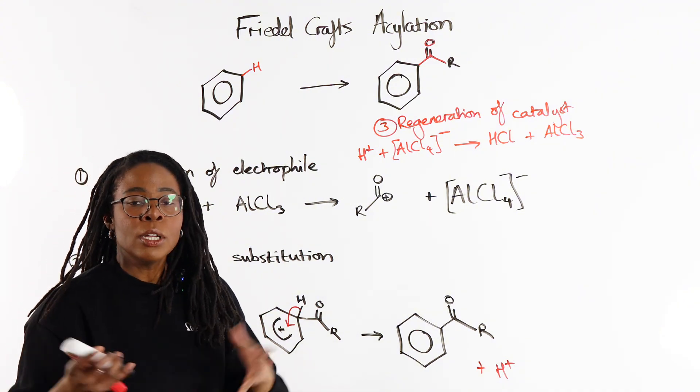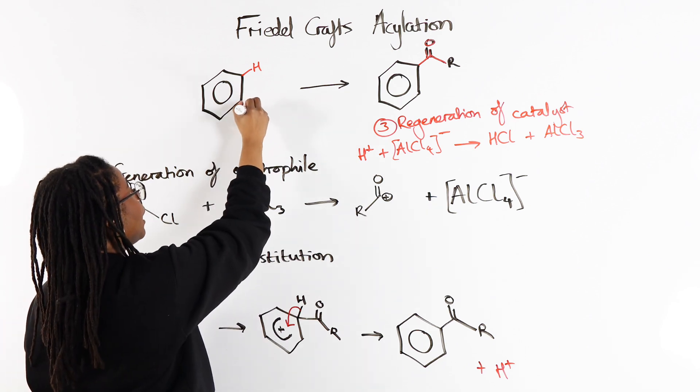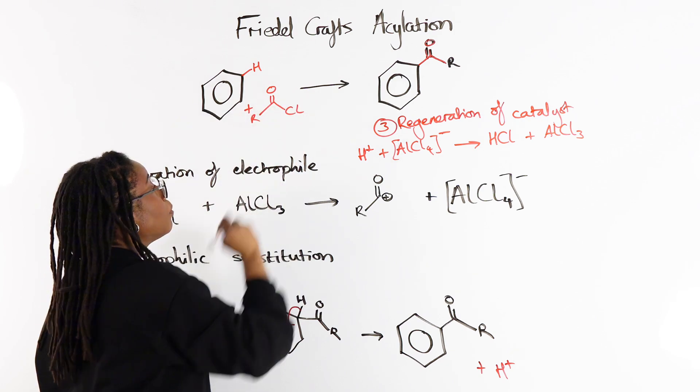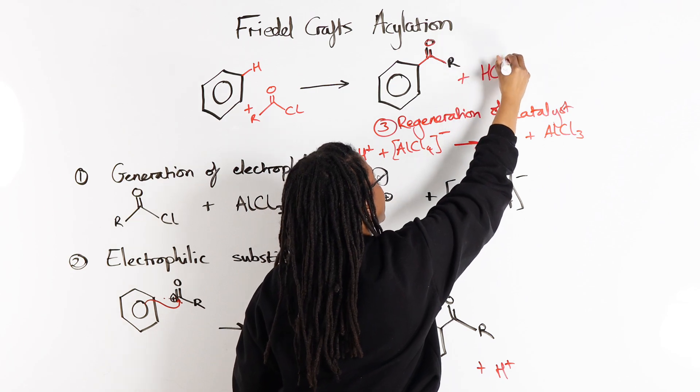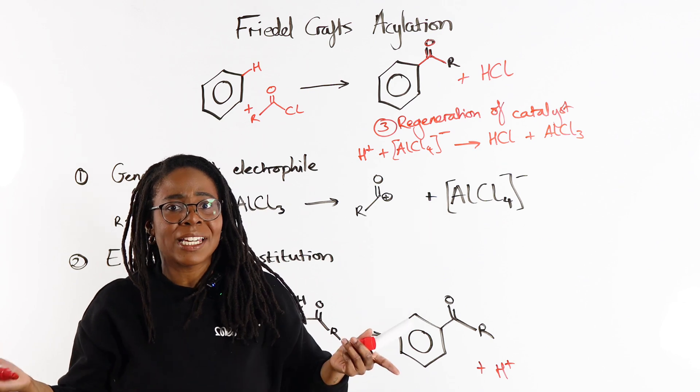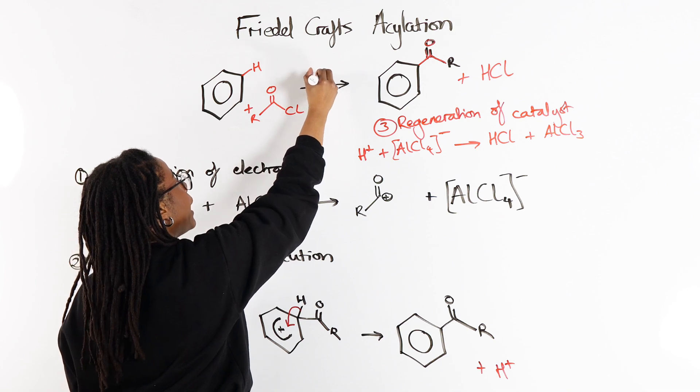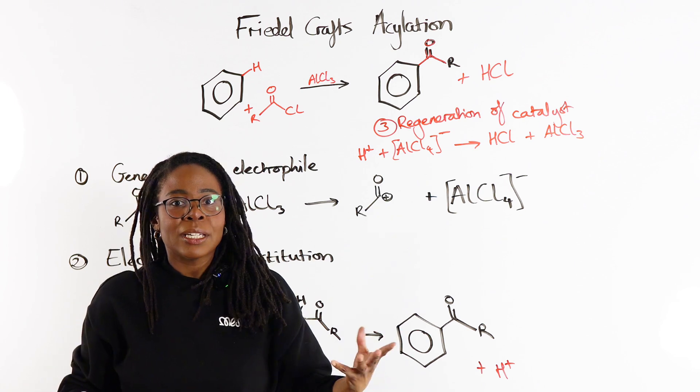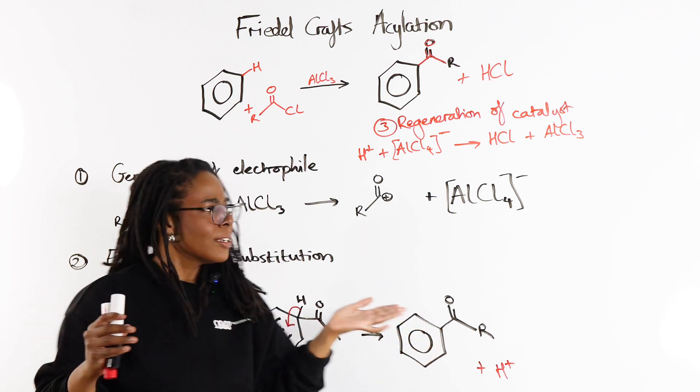So our overall equation for this reaction would be our benzene plus our acyl chloride produces our substituted product plus HCl. We do not include the AlCl3 in our equation because it is a catalyst. If we really wanted to, we could put the AlCl3 over the arrow to show that it is a vital reaction condition, but it is not involved as a reactant or a product.